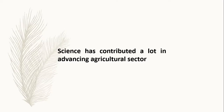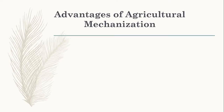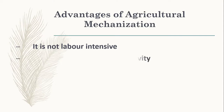We can boldly say science has contributed a lot in the advancement of agriculture. Regarding the advantages of agricultural mechanization: number one, it is not labor intensive. With the help of agricultural mechanization, one or two people could handle one hectare of land within a very short time. Before, without these machines, a lot of people had to take cultivating tools like hoes and cutlasses to cultivate a single land, which would take many days.